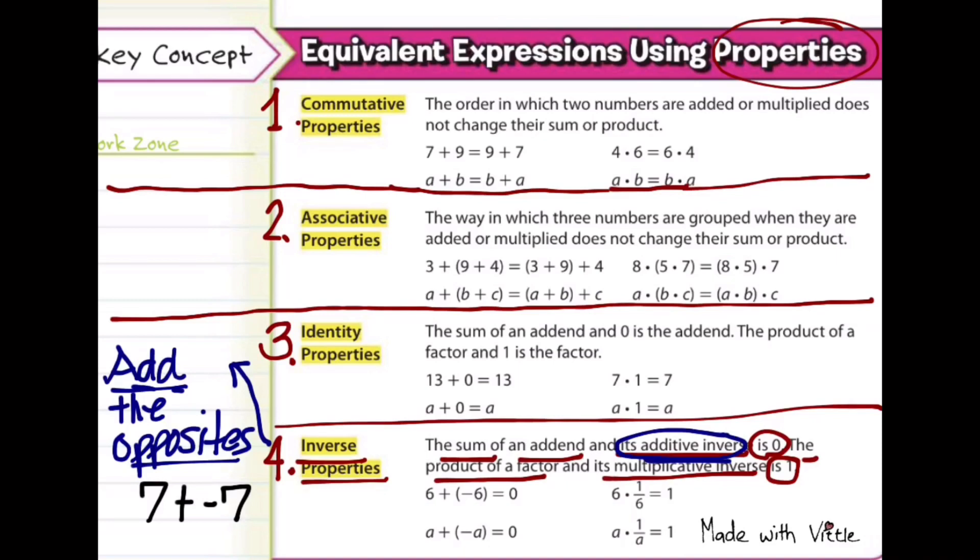For example, 7 plus negative 7, since they're different signs, you're going to have to subtract. So 7 minus 7 is 0. Because you added the opposites, or their additive inverse. What about negative 12 plus positive 12? You have to subtract because they're different signs. So that's going to be equal to 0.